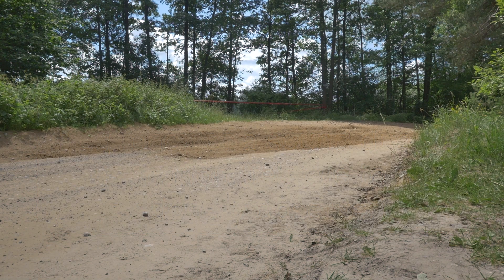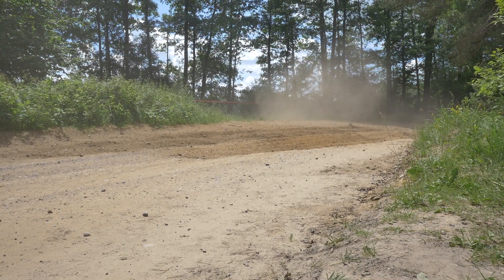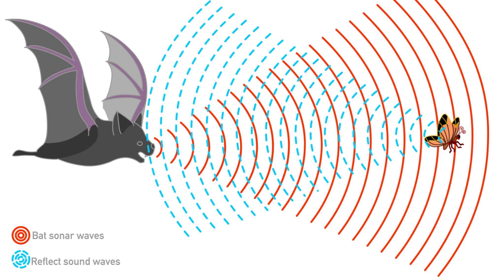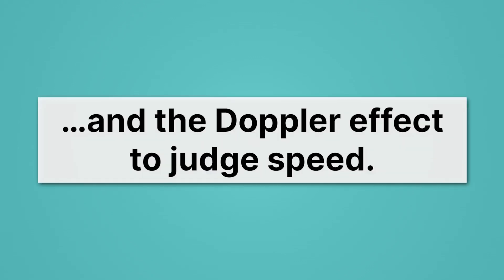Let's listen to the Doppler shift one more time — high pitch, then low pitch. The Doppler effect is actually really useful. Bats use sonar waves to detect their prey; for example, a bat is about to catch a butterfly. It needs to keep track of where the butterfly is, but also if it's moving. The Doppler shift will happen to the sound waves the bat puts off if the butterfly is moving forwards or backwards, and that allows it to tell not just where the butterfly is, but how fast it's moving. So bats use sound to see and the Doppler effect to judge speed.